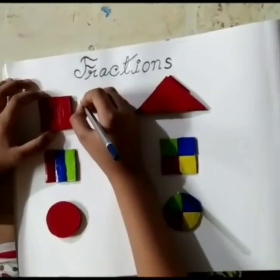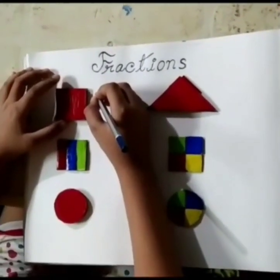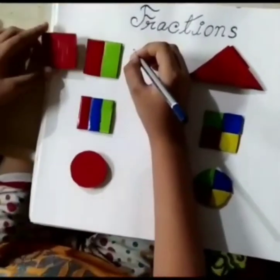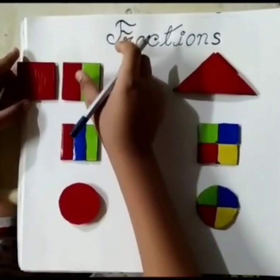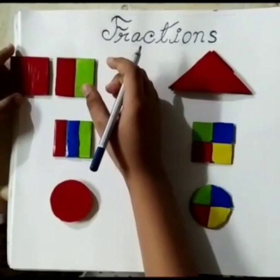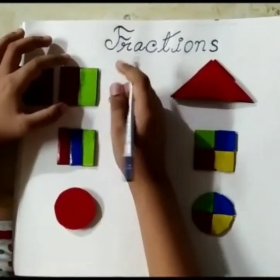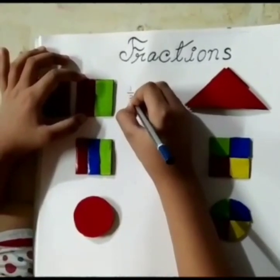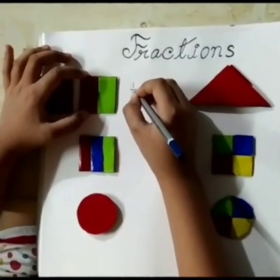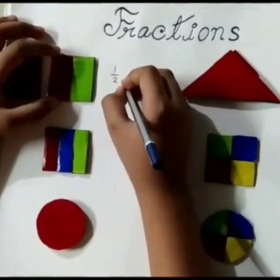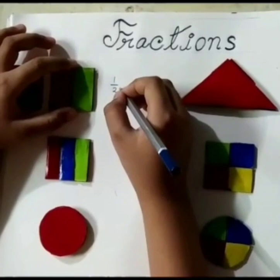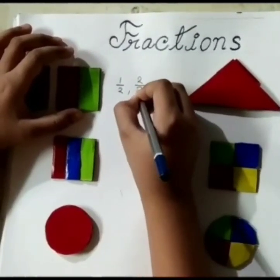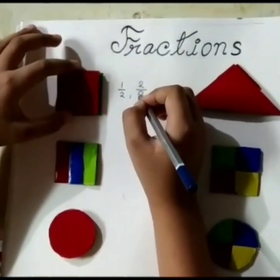A fraction is a part of a whole. Here we have a whole square and we have divided it into 2 equal parts. We can write it as 1 by 2. That's the half, and if we take the whole, that's 2 by 2, which is equal to the same whole.